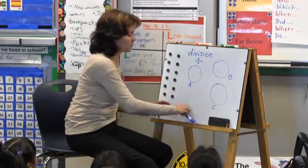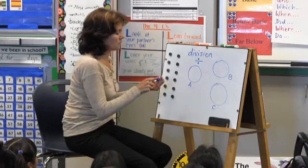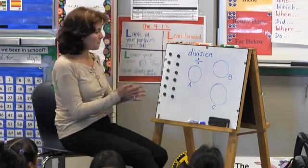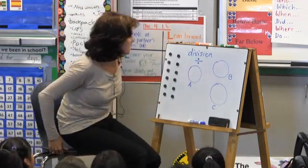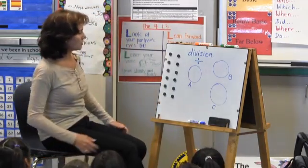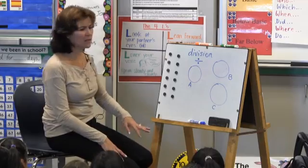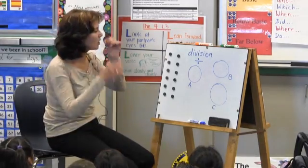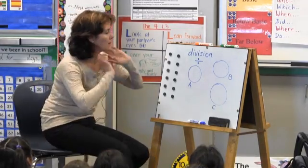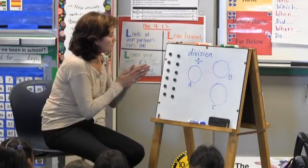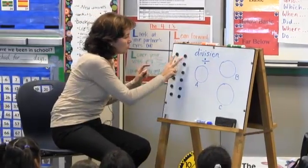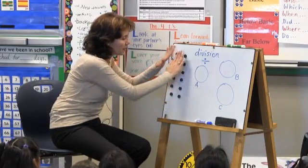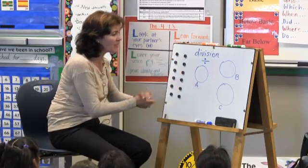And here are all my cars. Are you with me? Yes ma'am. Two, four, six, eight, ten, twelve. I have my twelve cars here and they need to be divided equally into those three garages.